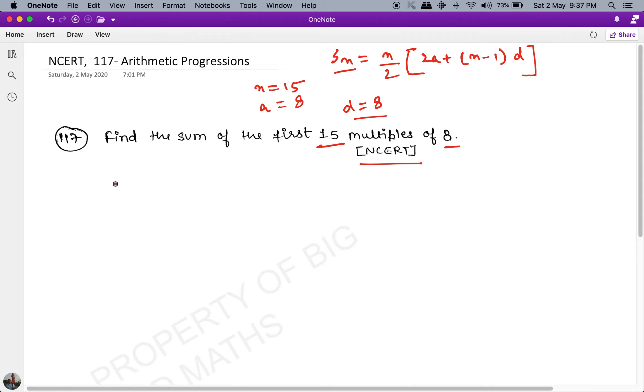And we get Sn = n/2 multiplied by [2a + (n-1)d]. Plugging the values, we get n/2 is 15/2, multiplied by 2 times a which is 8, plus n-1 that is 15-1 which is 14, into d which is 8.